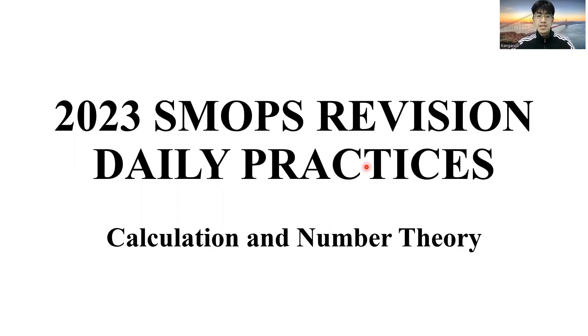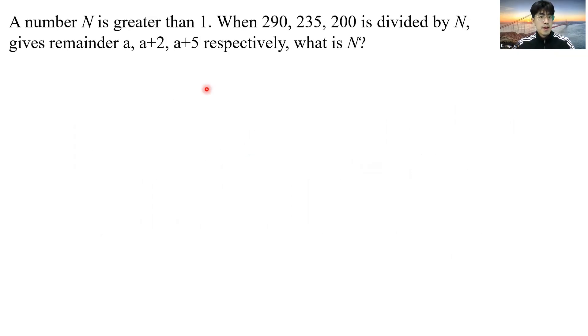Welcome back to our channel. I'm teacher Cedric, and today we're going to go through the SMOPS revision daily practices from the module calculation and number theory. Let us start with the first question. Number N is greater than 1. When 290, 235, and 200 is divided by N, gives remainder a, a plus 2, a plus 5 respectively. What is N?